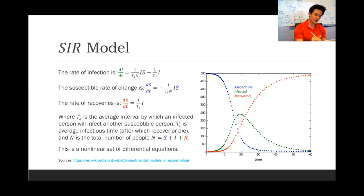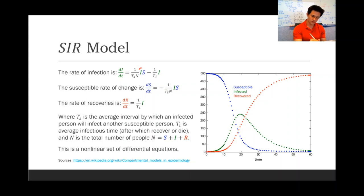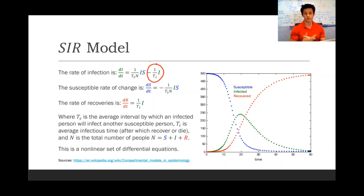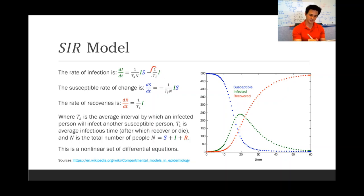The rate at which new infections occur — in other words, the change in infections per unit time — is proportional to the number of people who are presently infected times the fraction of the population who is currently susceptible, divided by some constant, minus the rate at which people recover from the disease, which is proportional to the number of people who have it times some other constant.